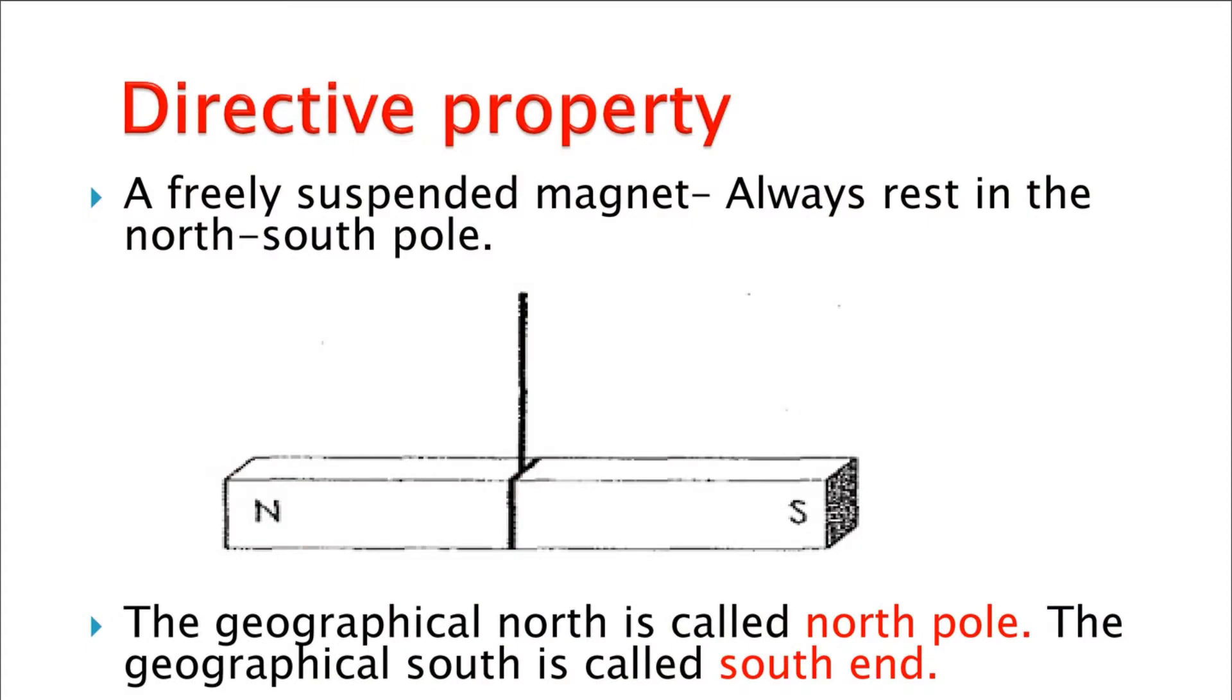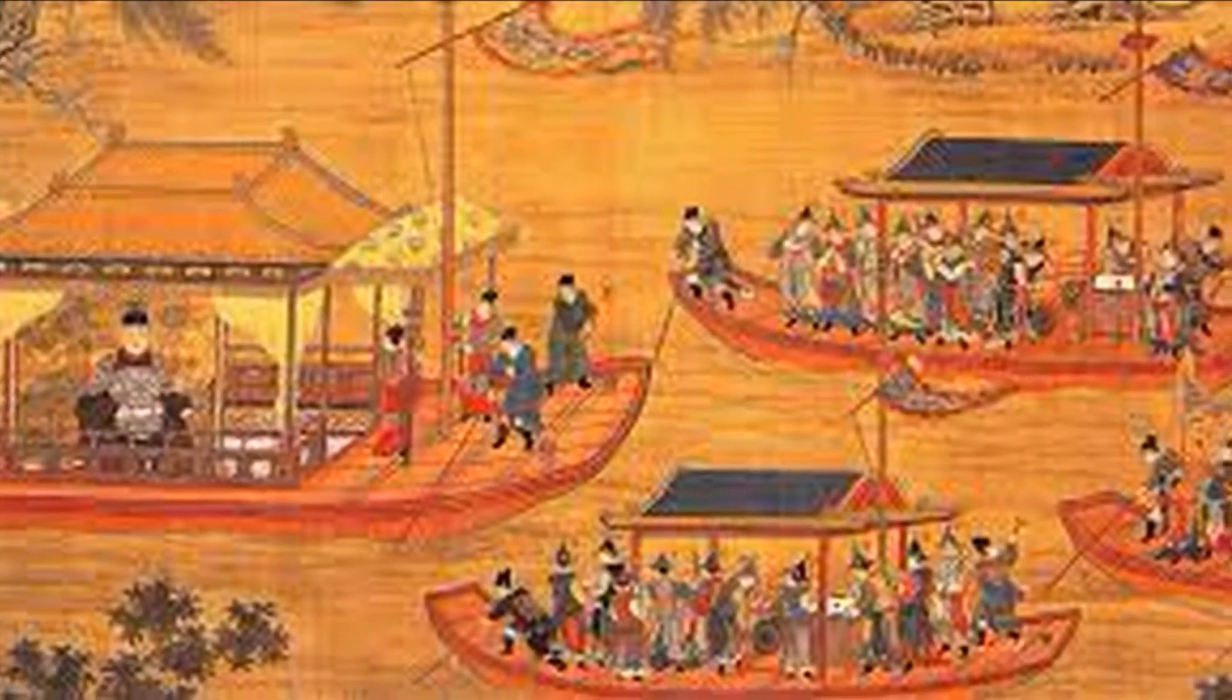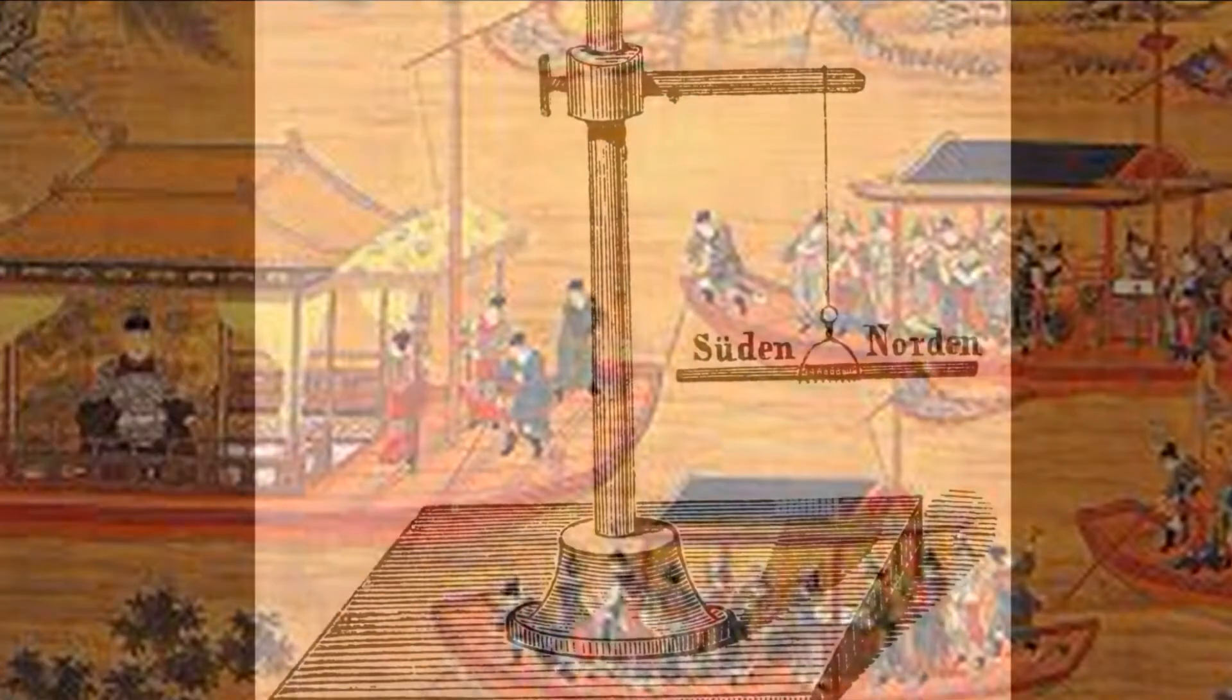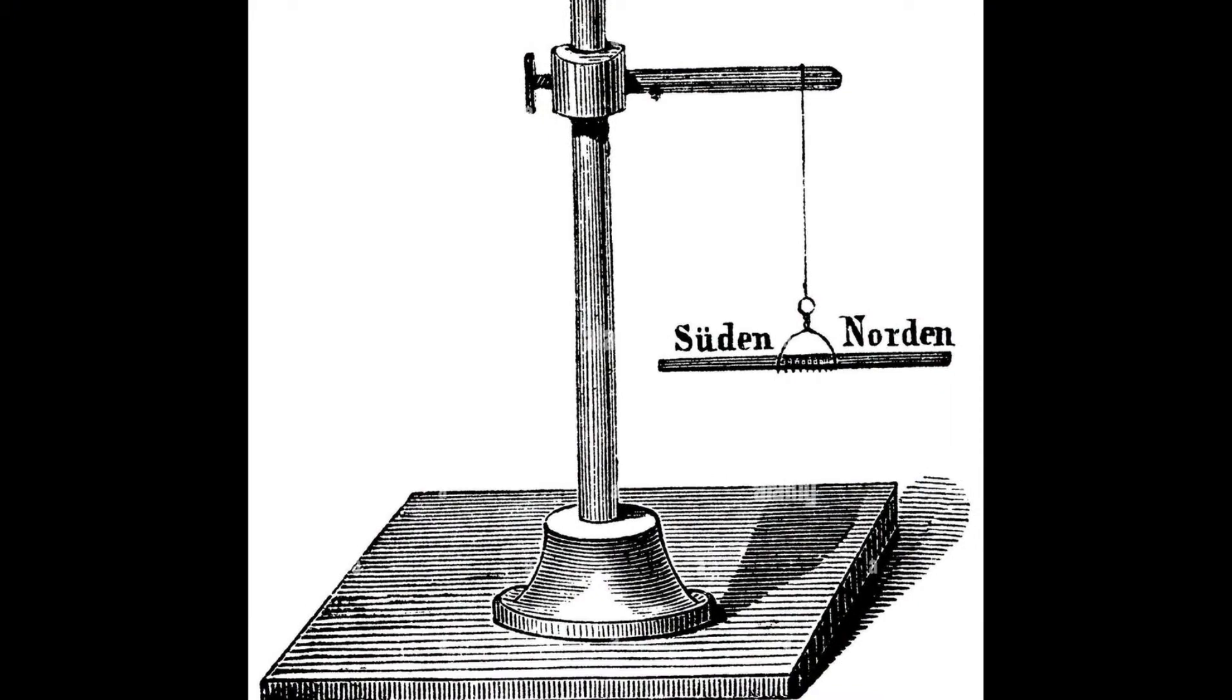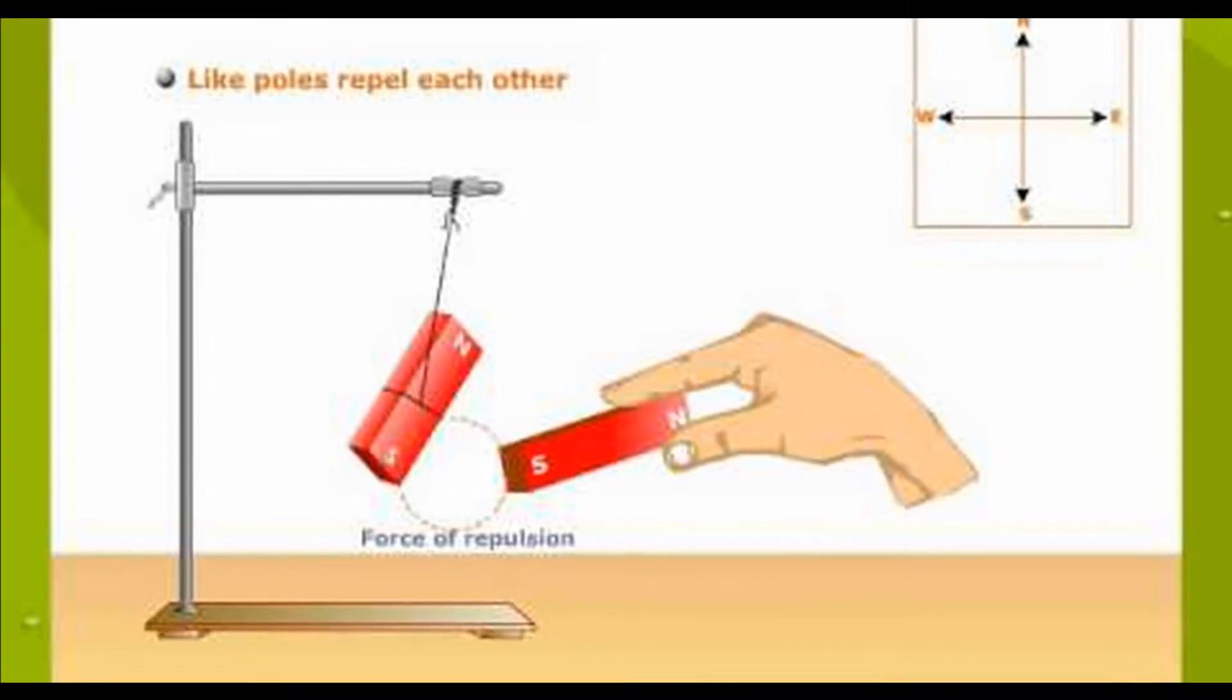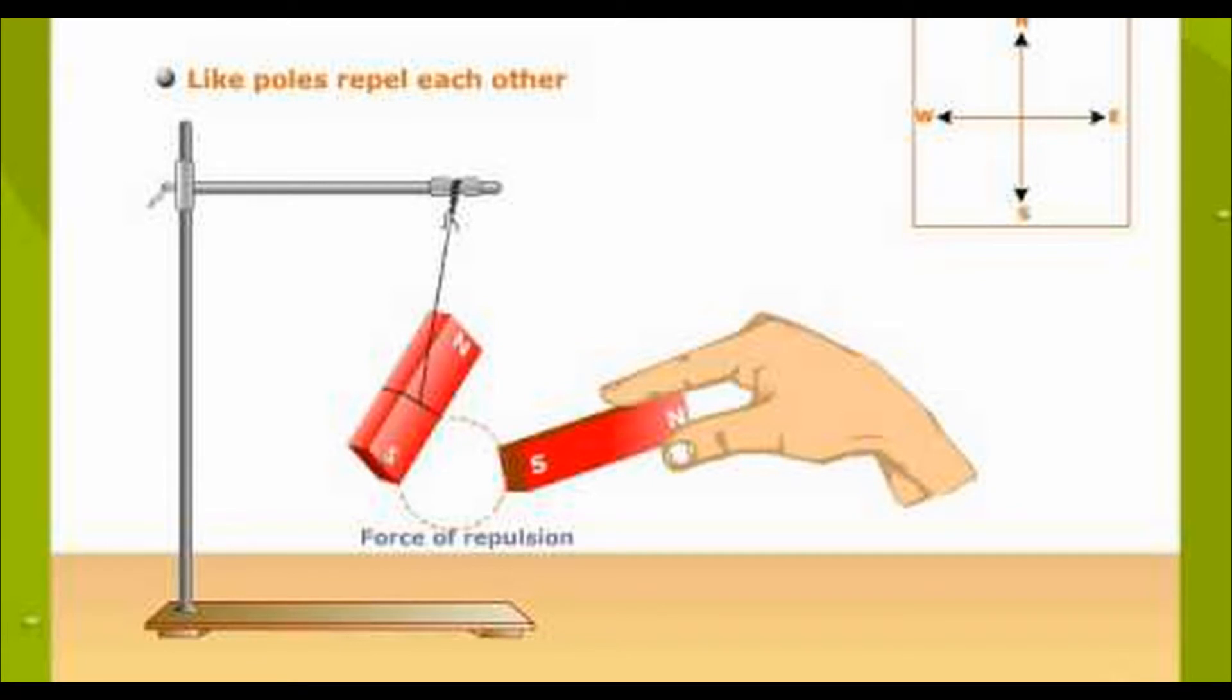Directive property of magnets. The ancient Chinese were probably the first to discover another fascinating property of magnets. They found that when a piece of lodestone magnet was allowed to swing freely, it always came to rest pointing in the same direction. That is a north-south direction.